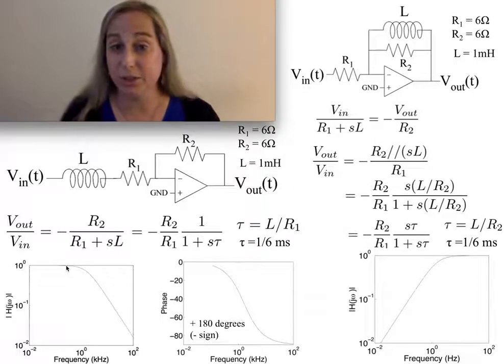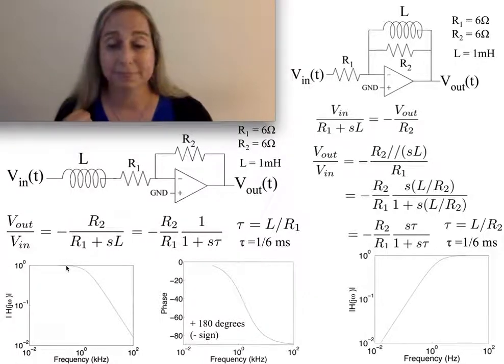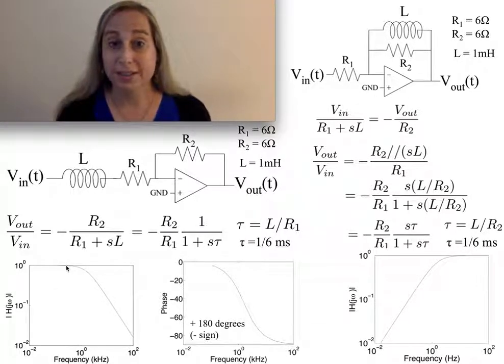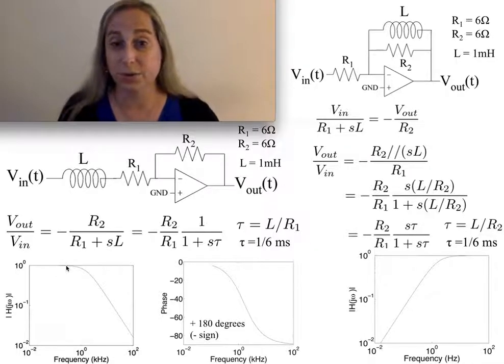Remember, I'm taking S and it becomes jω because I'm looking at steady-state frequency components. The sigma part, which relates to exponential increases and decreases in the response, doesn't occur because I've reached steady-state sinusoidal output.